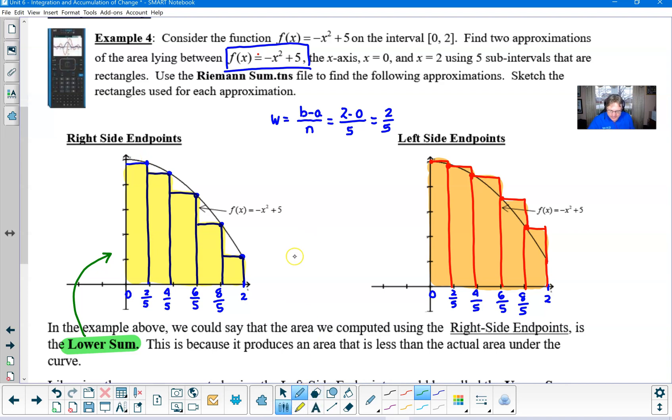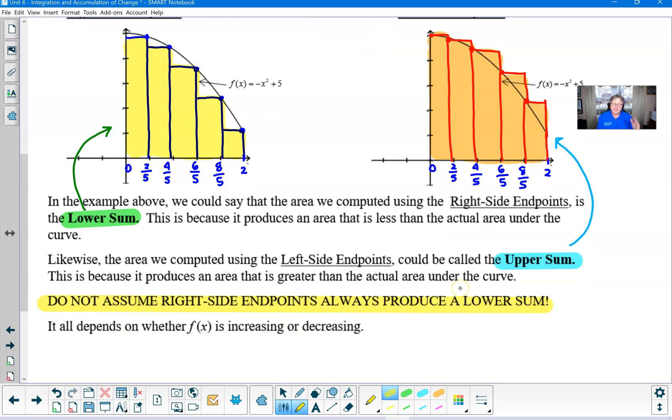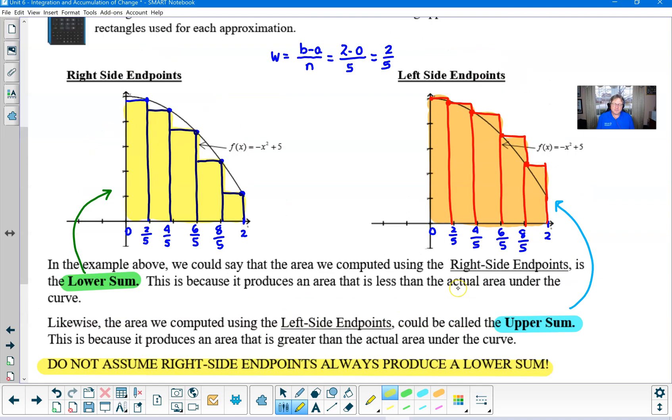Now, if you look at the other picture with the left endpoints, we find that we have a different situation altogether. In this particular problem, we have an upper sum. In other words, we have a scenario where the area of all of these orange rectangles added together would be greater than the area under our curve. Now, I can't emphasize this next statement enough. Do not assume that right endpoints always produce a lower sum because it's going to depend on whether or not f of x increases or decreases. So you want to be kind of comfortable with that idea.